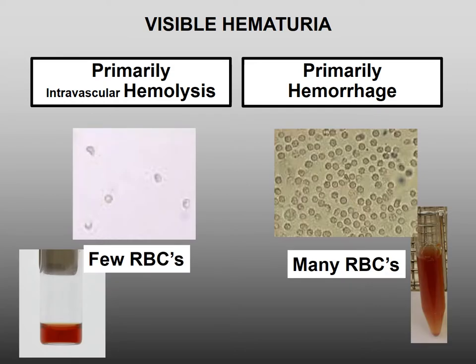Visible hematuria is medically important and is the result of either intravascular hemolysis or hemorrhage. The urinalysis can help make this distinction. In both cases, occult blood is positive, but with intravascular hemolysis there are few red blood cells in the urine sediment analysis, and with hemorrhage there are many red blood cells.